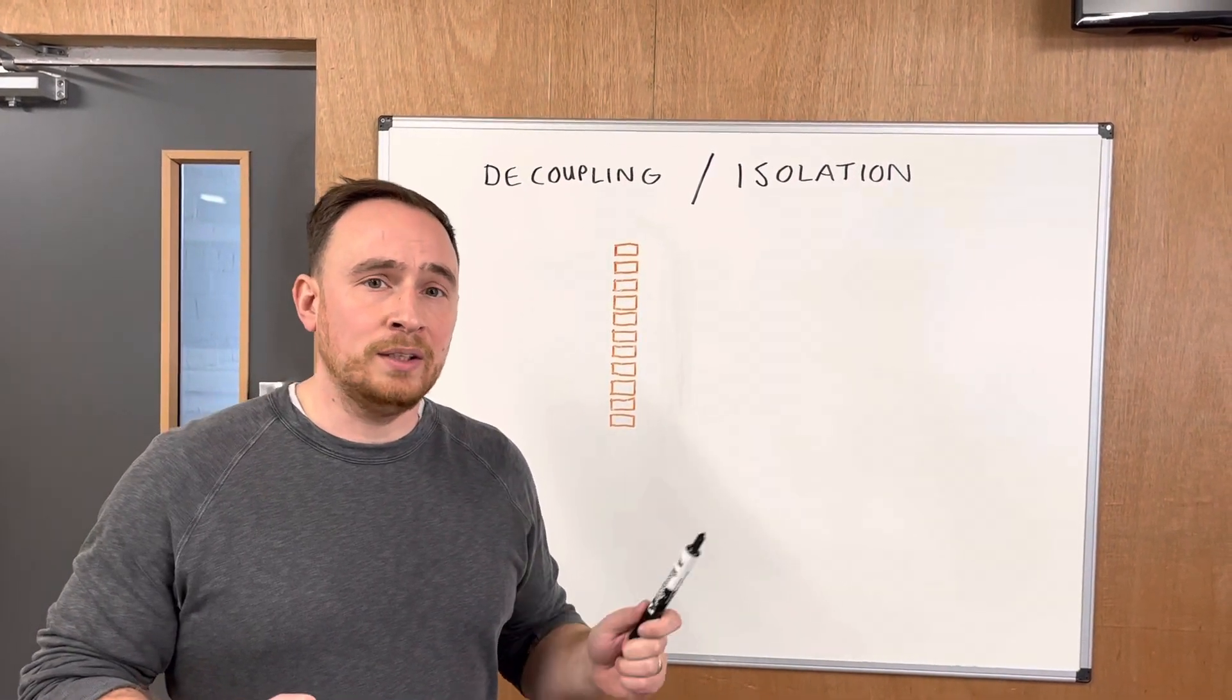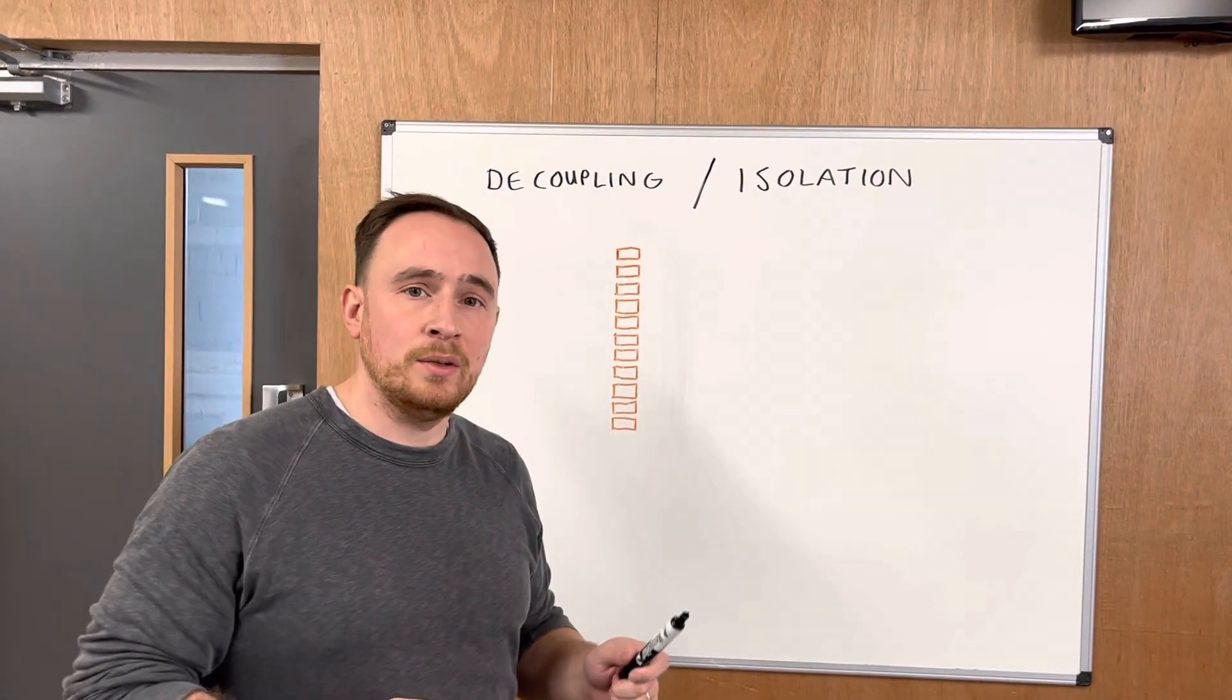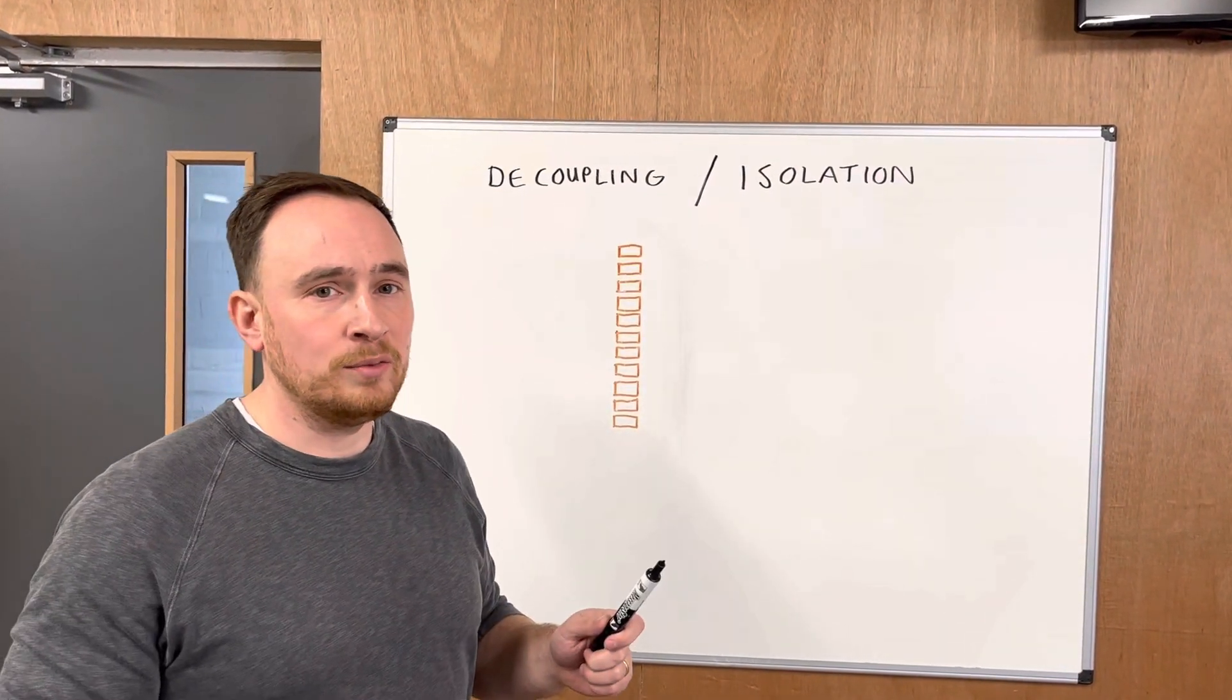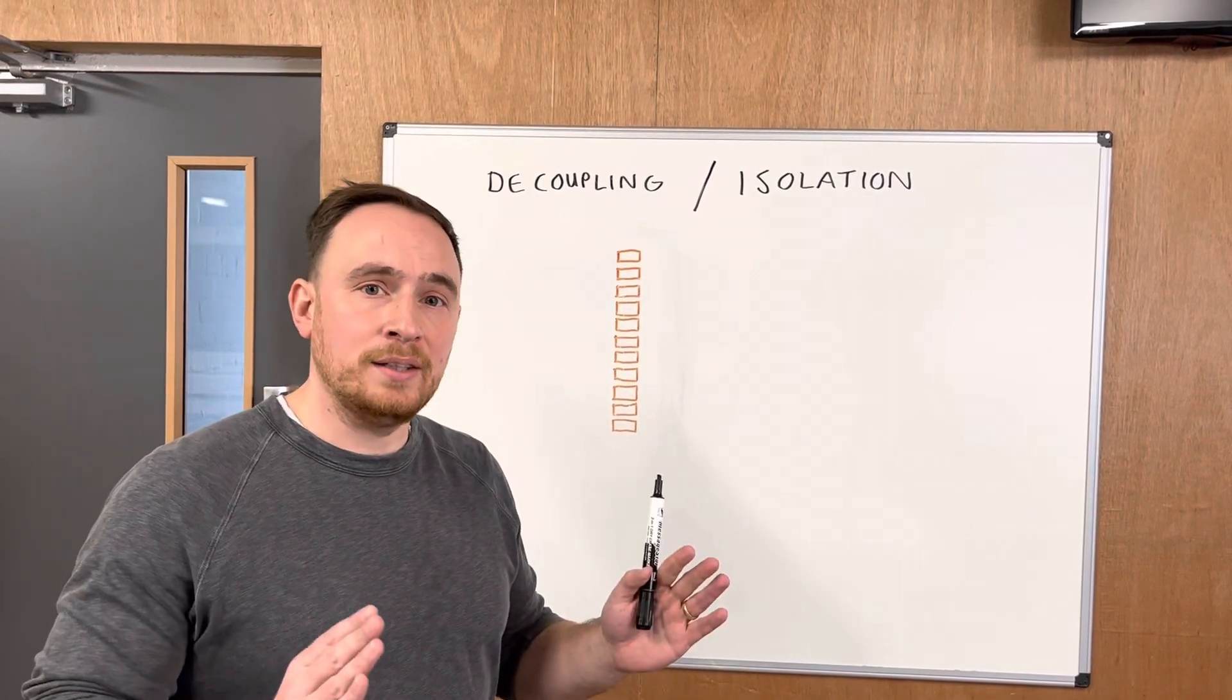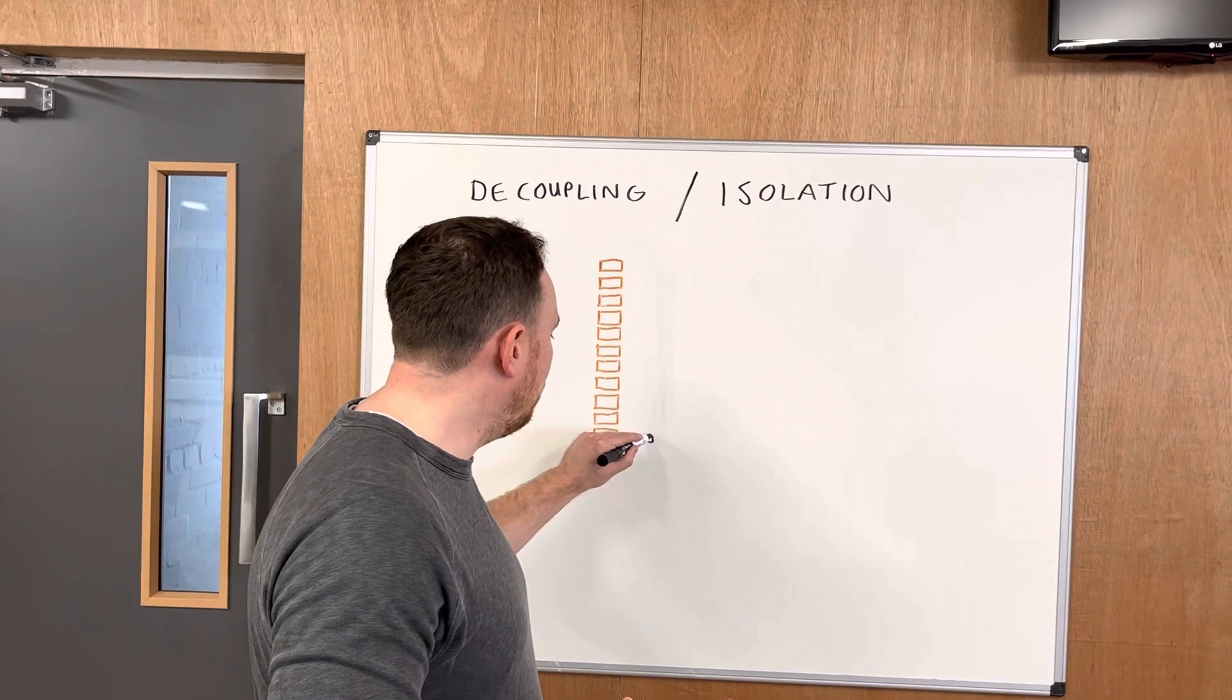If we're looking at that in buildings and particularly walls, the best way to do it is also the most cost-effective way. That's by creating complete isolation. By doing that in walls you can build a new wall, a completely independent self-supporting timber or metal stud.